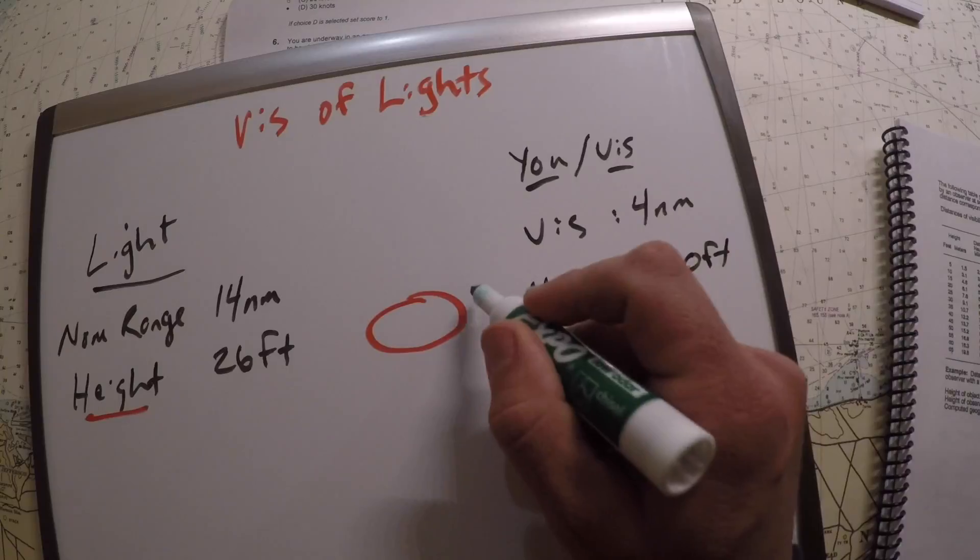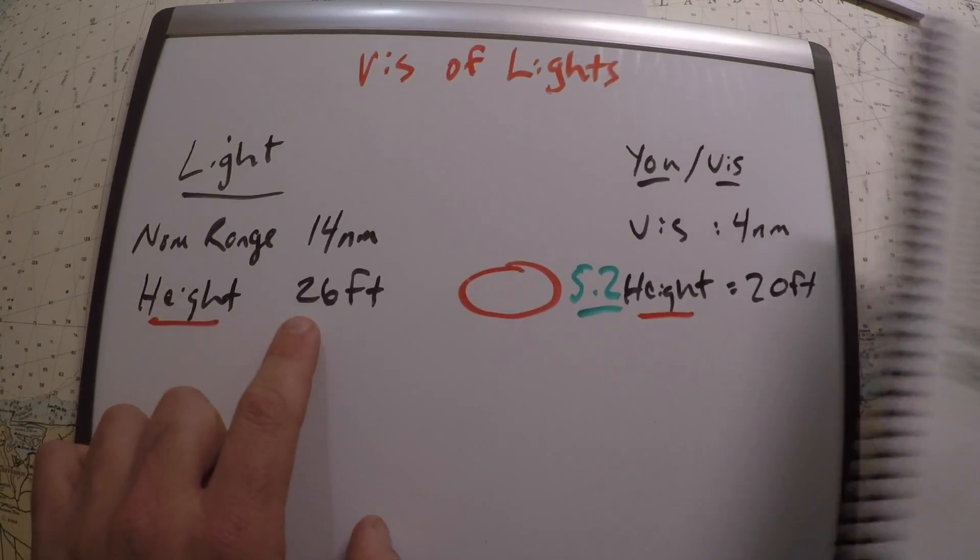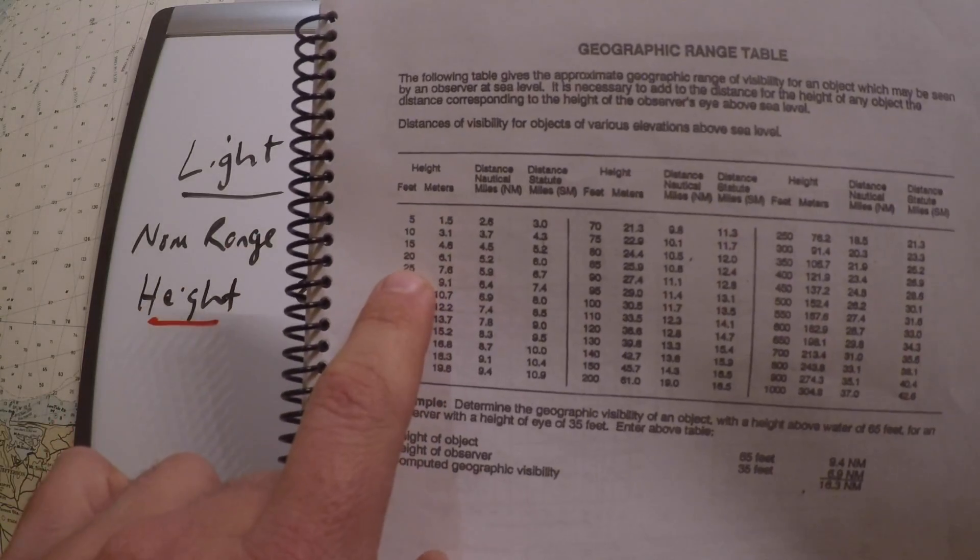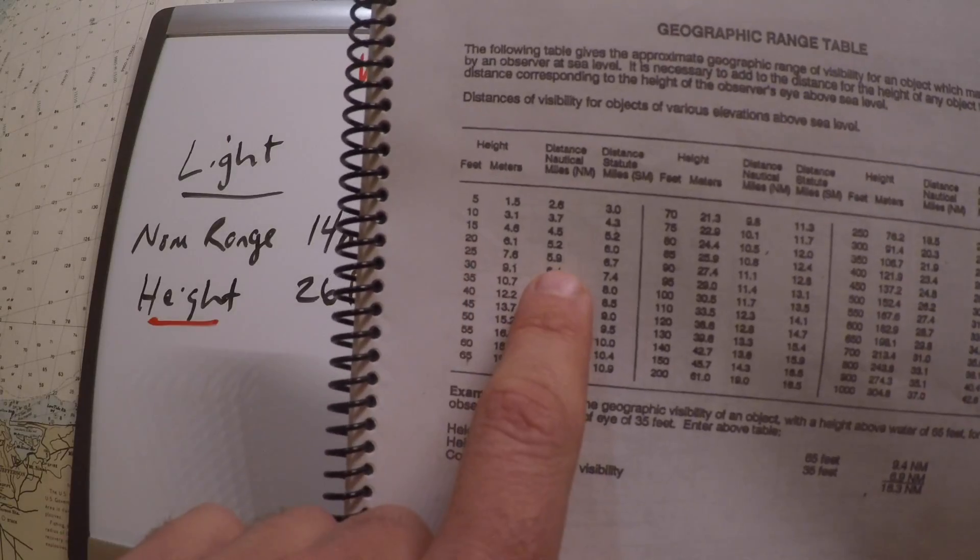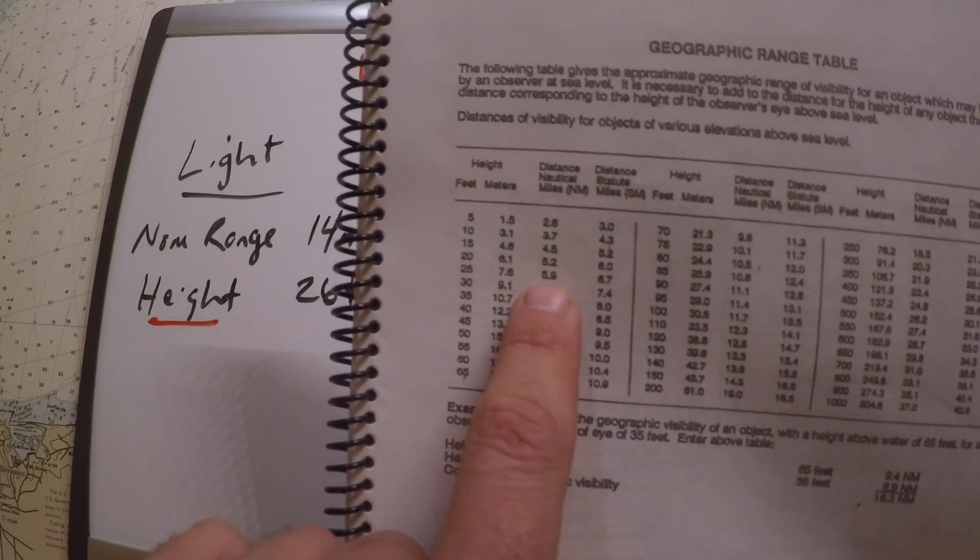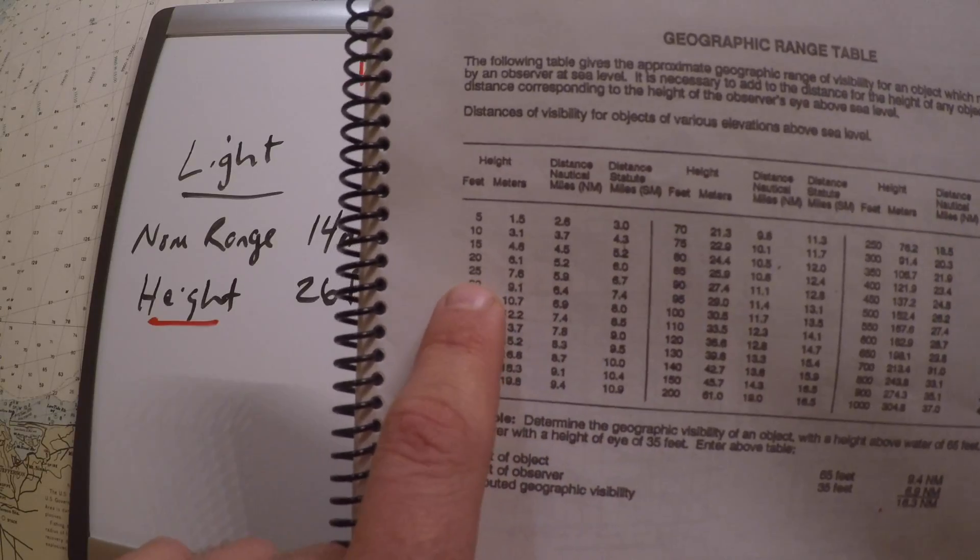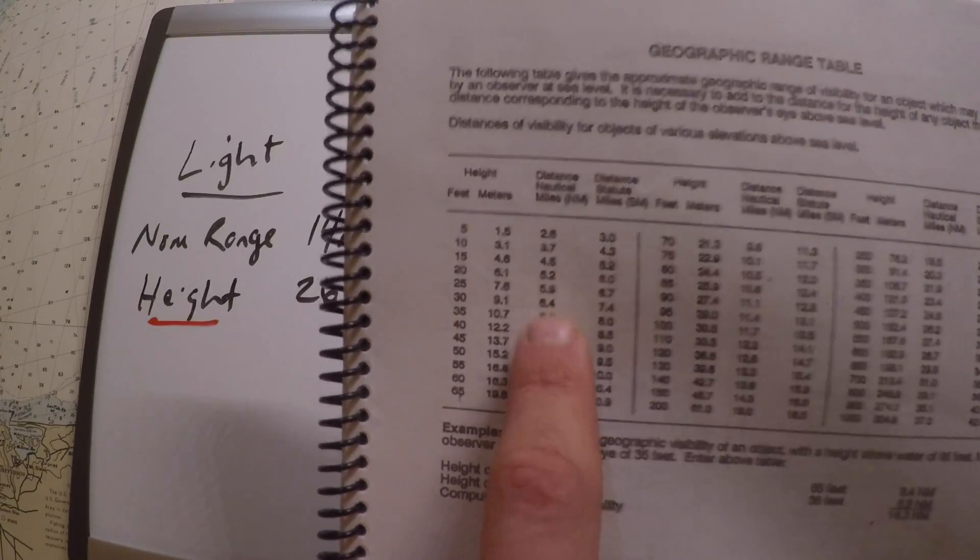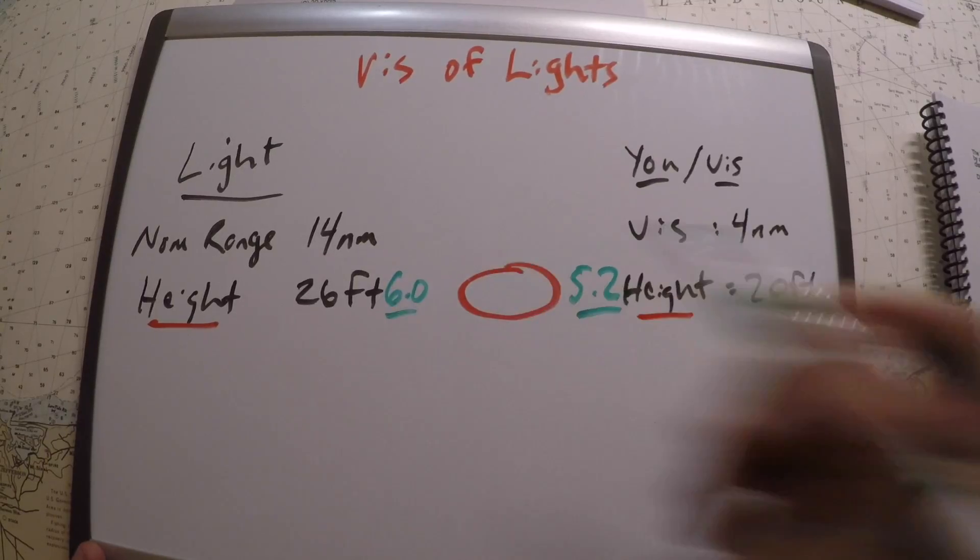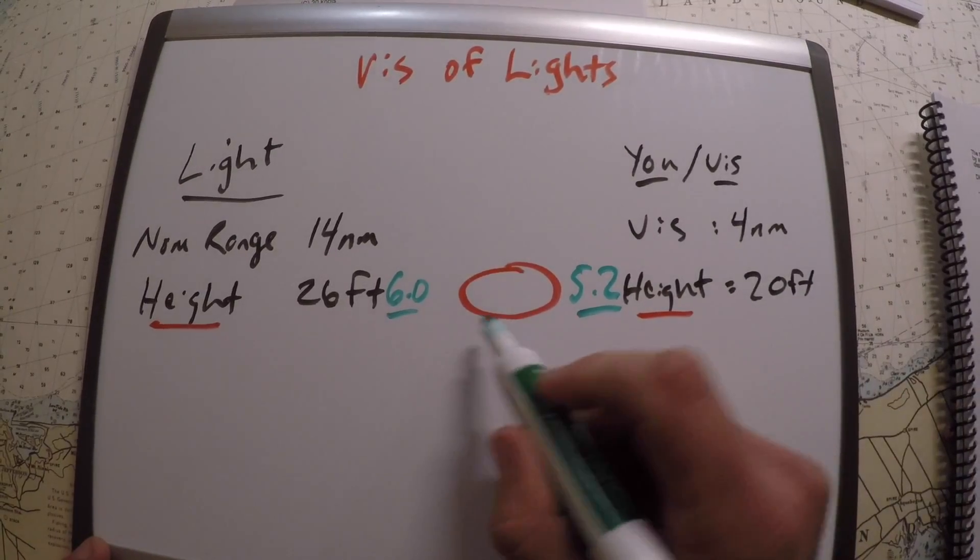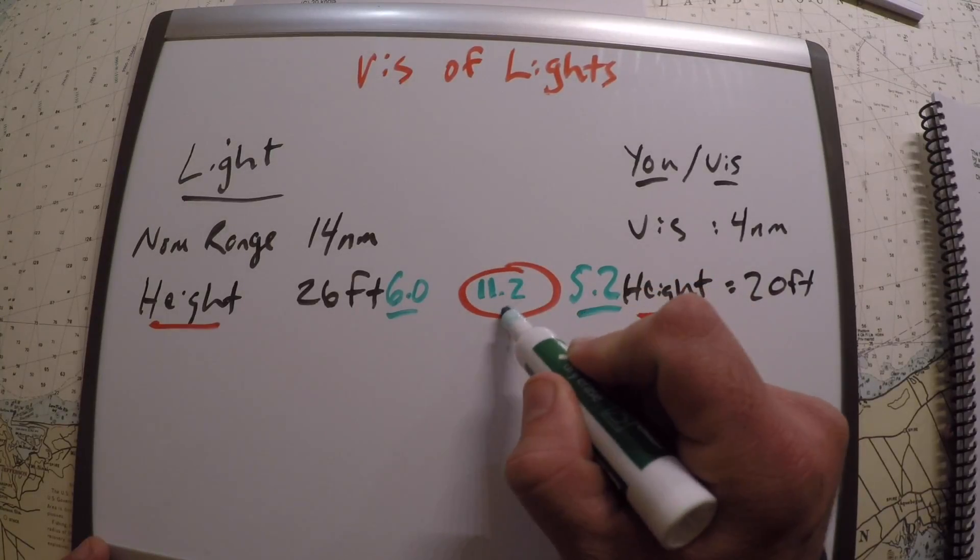And then the lighthouse itself had a height of 26 feet. That's not exactly listed, so it's somewhere between 25 and 30, somewhere between 5.9 and 6.4. If we're at 26 we're pretty close to the 25, so what if we said 6.0 as a rough approximation. And then the geographic range is the combination of these two, so that would be 11.2 nautical miles for the geographic range.